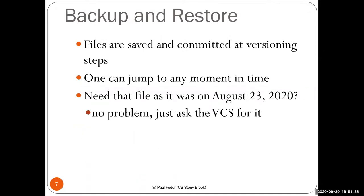Backup and restore is the basic action of a version control system. Files are saved and committed at versioning steps — once you commit to the repository, a version ID is given to the current file. The entire history is available, so you can jump to any version in the past. For example, if you need a file that was committed on August 23rd, 2020, you ask the version control system and you get that version.